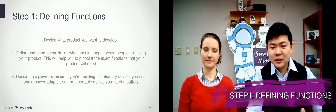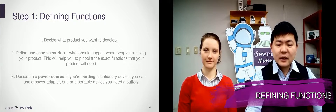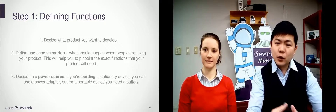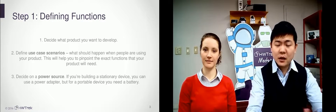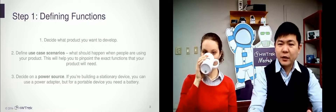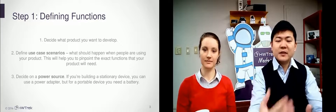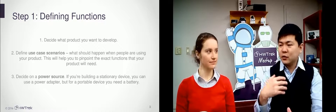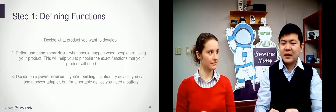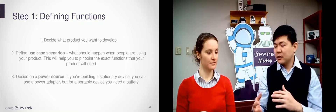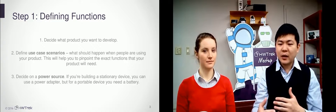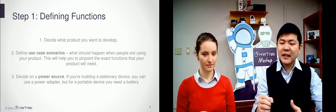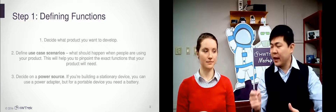Step number one: defining functions. To start an electronic design, first of all you will need to define your product. Do you want to build a security camera, a smart watch, or a smart toy, or something else? Once you have decided which product you want to develop, then you can start defining the use scenario, which basically means what things you want to deliver — like when people use your product, what kind of result you could get. This helps you to pinpoint the exact functions that your product will need to have.